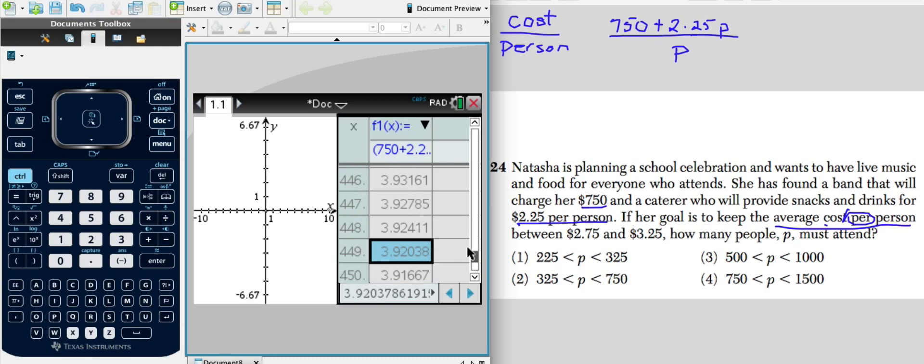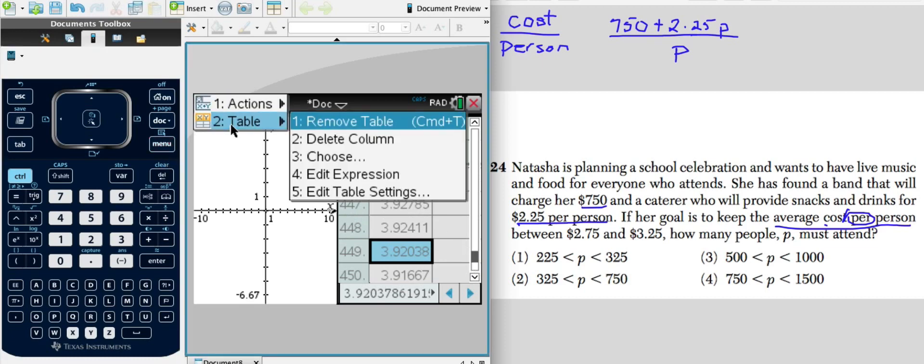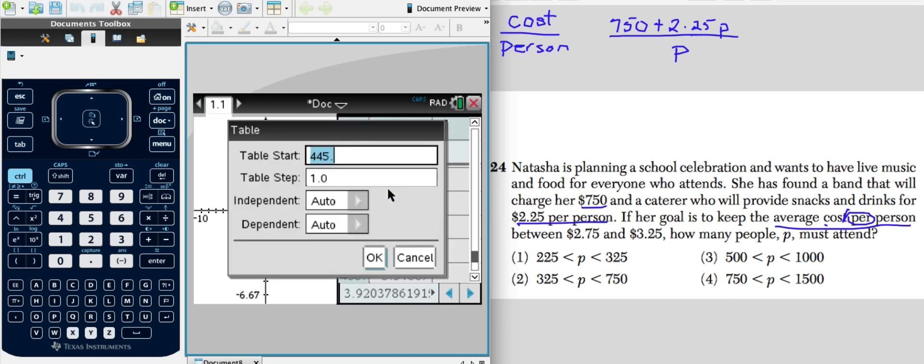Another thing we can do is this. If you get tired of scrolling, we can go to the menu and table and edit table settings. And I know that I'm pretty close to 500 where I am, so I'm going to try another value. I'm going to zip right over to, let's go over to 750. And click OK.